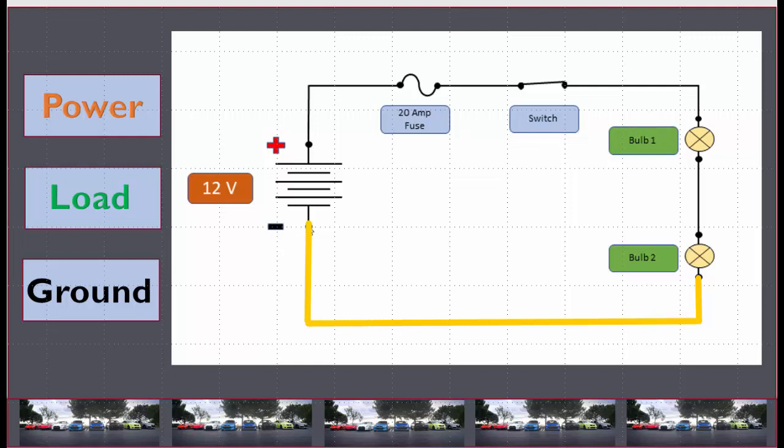Let me show you a few examples of what it would look like if there was a fault that was the power side missing or defective, or the load missing or defective, or the ground path missing or defective. So let's start with power.